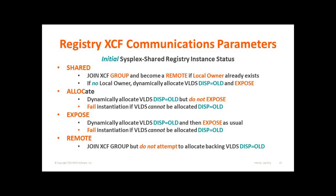Because only one shared registry instance can actually be the local owner of the MVS data space and the backing VLDS at any one time, all of the other registry instances will be the remote instances. The installation can specify the status of the RTCS system registry for that RTCS subsystem address space by specifying the desired or required initial state — including whether or not the instance must be the local owner, can be the local owner, or cannot be the local owner initially. It can also specify that it must become the local owner, but that remote instances cannot yet access this instance.